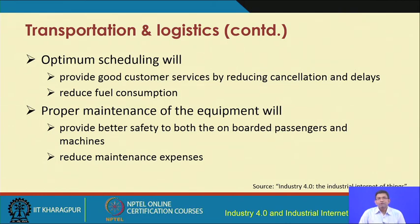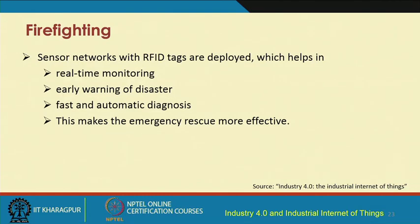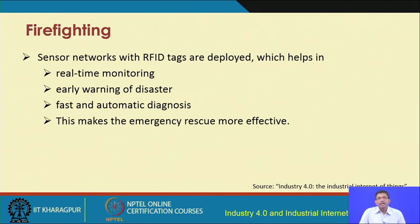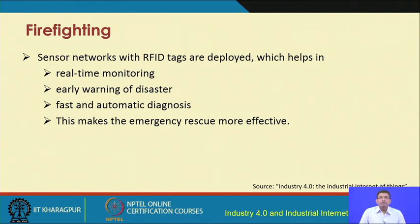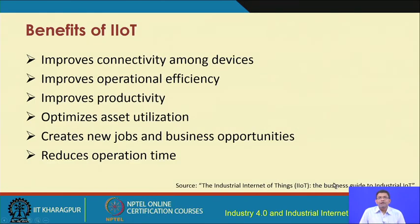Optimum scheduling of different vehicles can also be performed with the help of IIoT technologies. Optimum scheduling will provide good customer services by reducing cancellations and delays, and reduce overall fuel consumption. Proper maintenance of equipment will provide improved safety to both onboard passengers and machines, thereby reducing maintenance expenses. In fire fighting, sensor networks with RFID tags can be deployed to help in real-time monitoring of fires in industrial workspaces, buildings, and homes, enabling early warning of incoming disasters and automatic fast diagnosis of different faults.